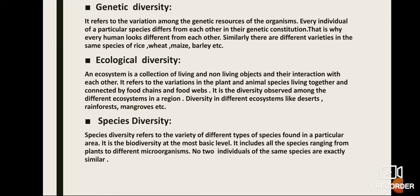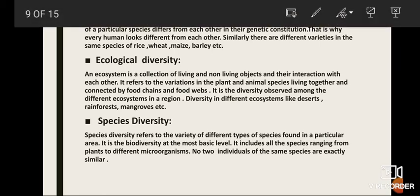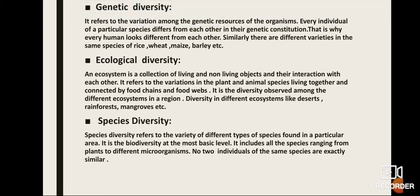The first type is genetic diversity. It refers to the variation among genetic resources of organisms. Every individual of a particular species differs from each other in genetic constitution — that is why every human looks different from each other. Similarly, there are different varieties within the same species of rice, wheat, maize, and barley.